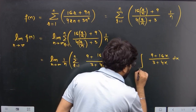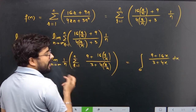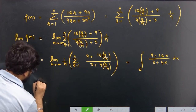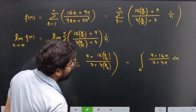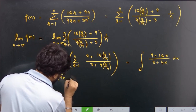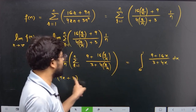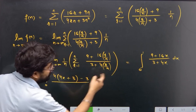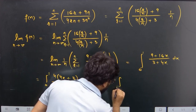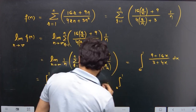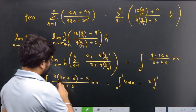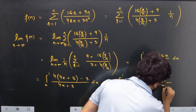As n tends to infinity, the lower limit becomes 0 and the upper limit becomes n/n = 1. So limit n→∞ of f(n) equals the integral from 0 to 1 of (9 + 16x) divided by (3 + 4x) dx. Simplifying: (16x + 12 - 3) divided by (4x + 3), which gives 4 minus 3 divided by (4x+3). So we get 4 dx minus 3 times integral from 0 to 1 of 1/(4x+3) dx.